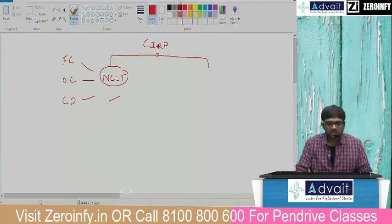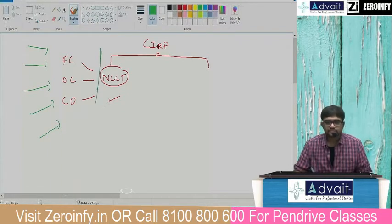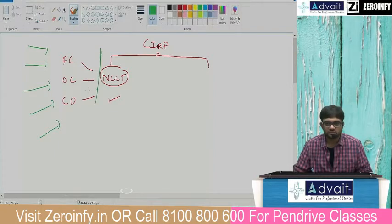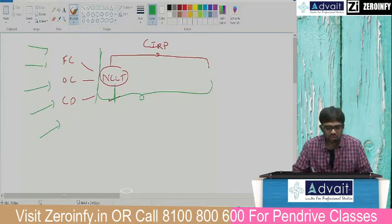If other laws — under Companies Act, SARFAESI, RDDBFI, Contract Act, Civil Court Judgment — all come in and disturb the company, that will hamper the entire resolution process. That is the reason why we have the concept of statute where the NCLT says: temporary suspension of all cases. That statute imposed immediately upon admission and the public announcement is called moratorium — a temporary suspension of activity.